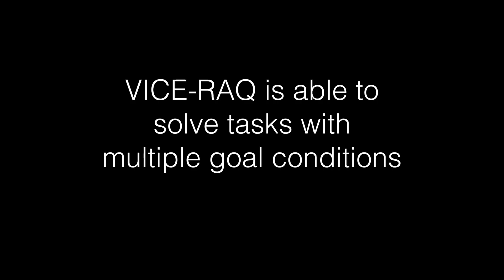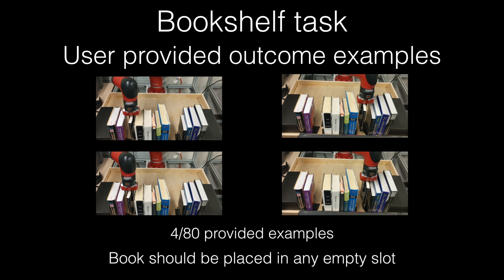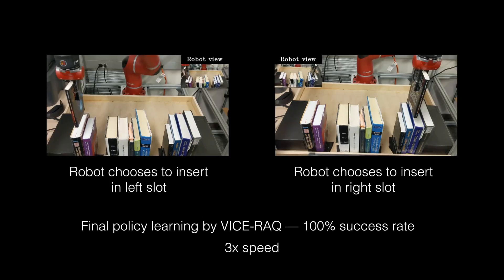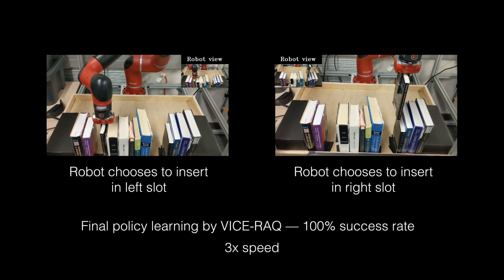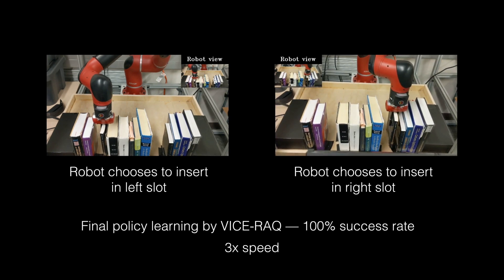Weissrack is able to solve tasks with multiple goal conditions. The goal here is to insert a book into one of the empty slots on a bookshelf. Note that the book is inserted in both the left and right slots in the outcome examples. The policy learned by Weissrack is able to insert the book in either the right or the left slot depending on the initial position of the book, choosing to insert the book into the closest empty slot.